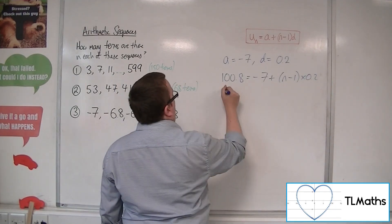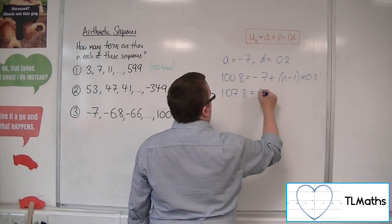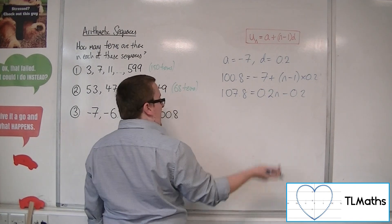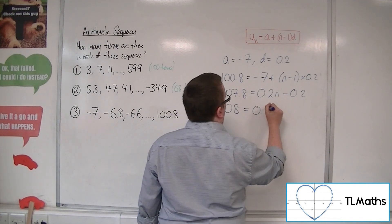So, 100.8 is equal to minus 7 plus n minus 1 times 0.2. Add the 7 to both sides, so 107.8 multiply through is 0.2n minus 0.2. Add the 0.2 to both sides, so that's 108 is 0.2n.